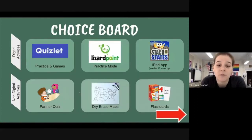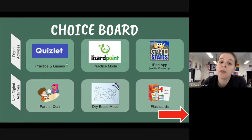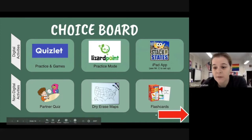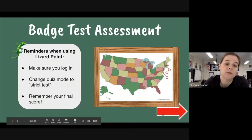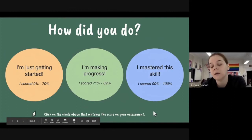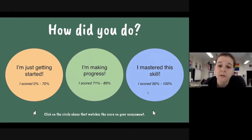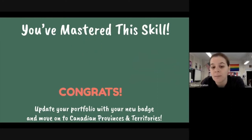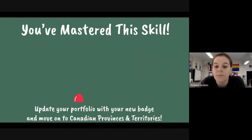At the choice board, activities are no longer structured in a particular order — it gives them a variety of ways to practice the skill and work toward mastery. They can do any of the digital or non-digital activities, in any order, or focus on just one that really works for them. When they feel ready, they take their badge test — directions on the left, click the image to access the assessment. If they score 90 or above, that's mastery: they click the blue circle, it congratulates them, and tells them to put their badge in their digital portfolio and which playlist to move on to next.